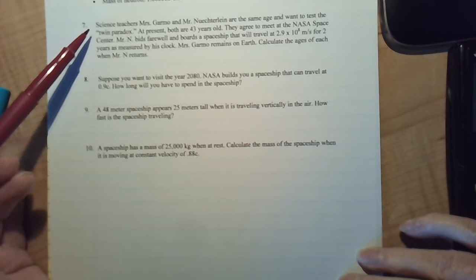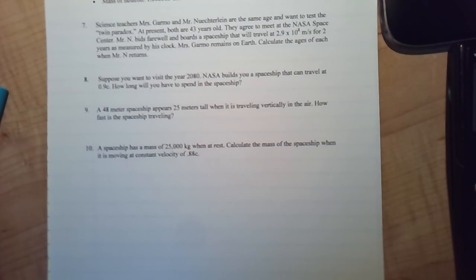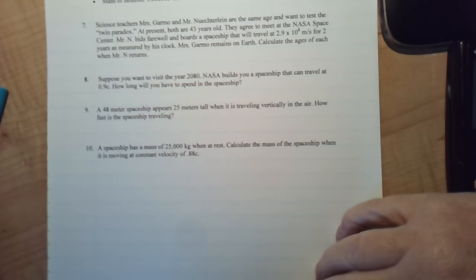All right, in this video we're going to look at a time dilation problem about Mrs. Garmo and Mr. Nectarline. It says that they are the same age and they want to test the twin paradox. At present, both are 43 years old. They agree to meet at NASA Space Center. Mr. N bids farewell and boards a spaceship that travels at 2.9 times 10 to the 8th meters per second for two years. How old are each when he returns?